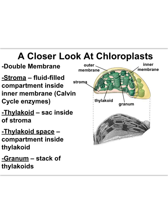Taking a closer look at chloroplasts, we can see the double membrane of chloroplasts, as we discussed with endosymbiosis in the macroevolution unit. Like mitochondria, the membranes of chloroplasts are called the inner chloroplast membrane and the outer chloroplast membrane. The compartment inside the inner chloroplast membrane is called the stroma. The Calvin cycle phase of photosynthesis happens in the stroma.